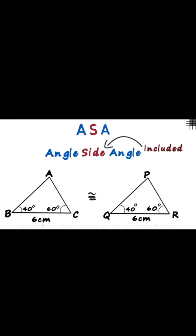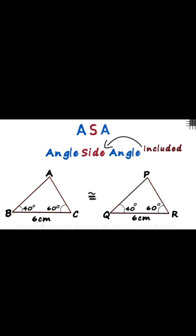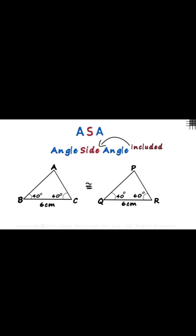Because this criteria cannot be applied everywhere. So we saw that when we have 2 angles - 40 degree and 60 degree equal - and the third included side 6 cm was equal, then both triangles were congruent. Is it possible that both angles and the side are on the edge this time?